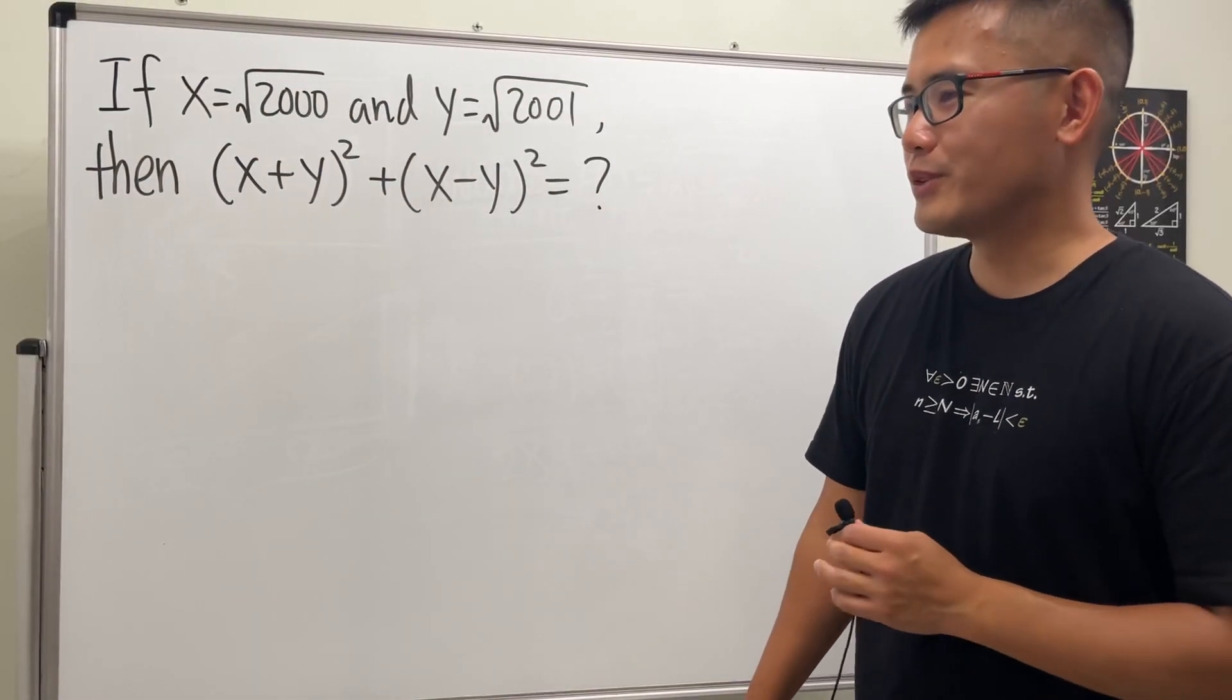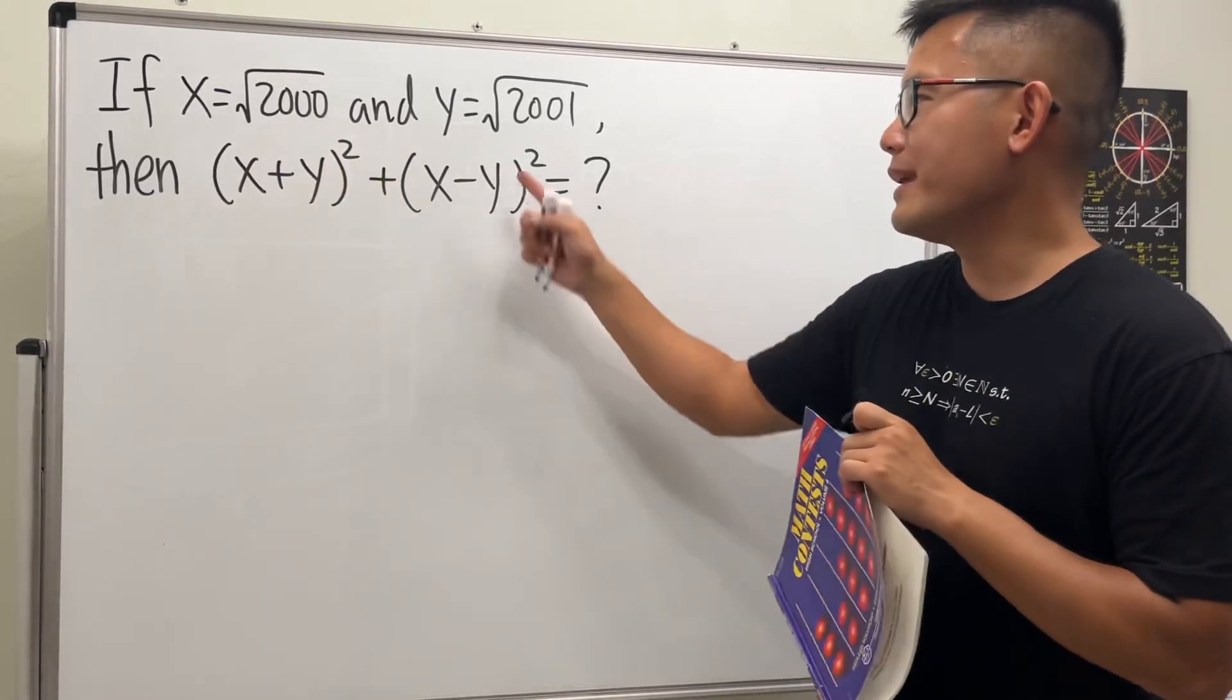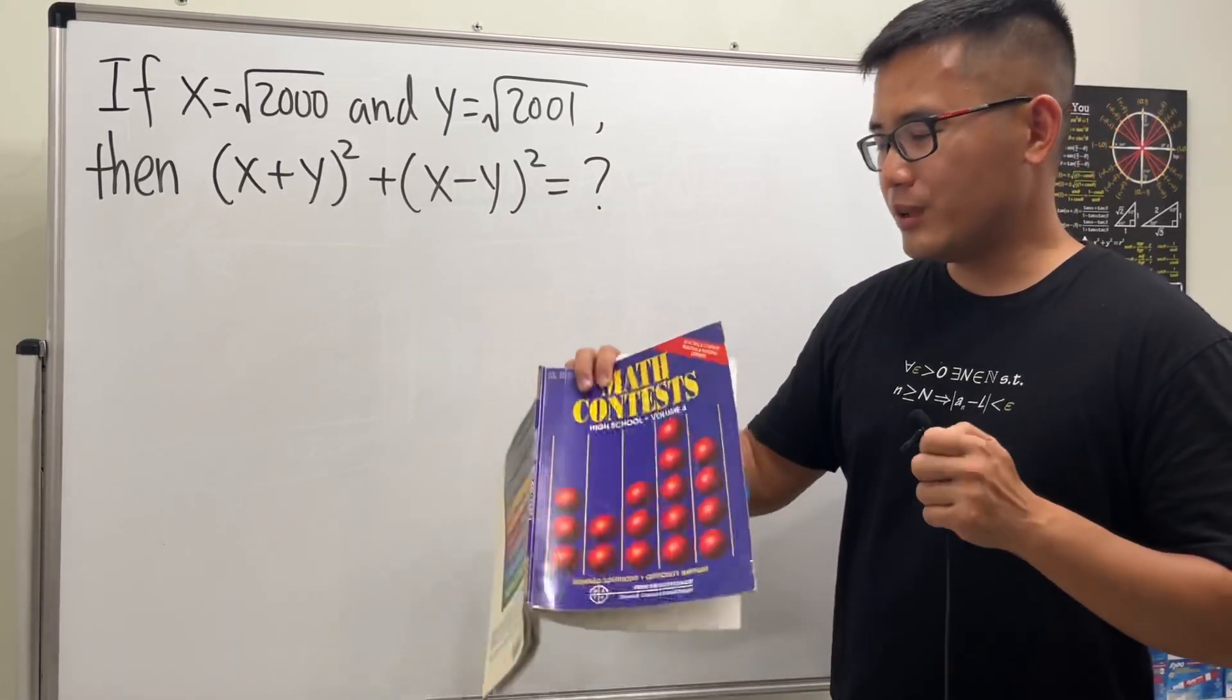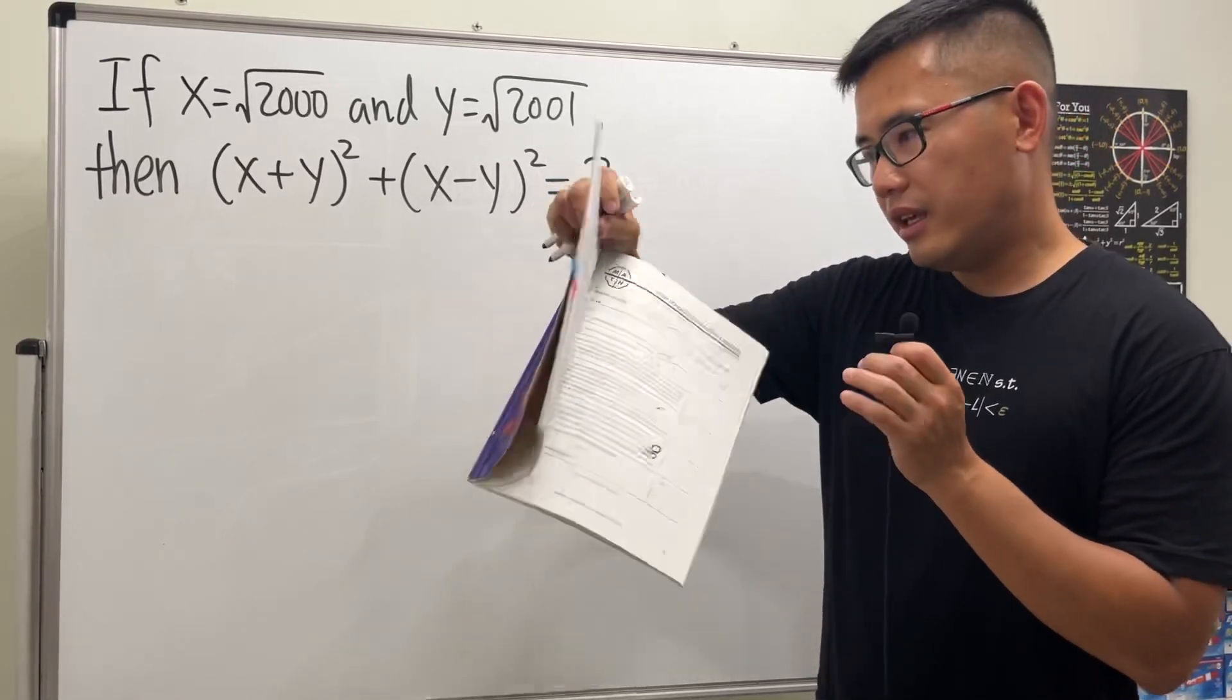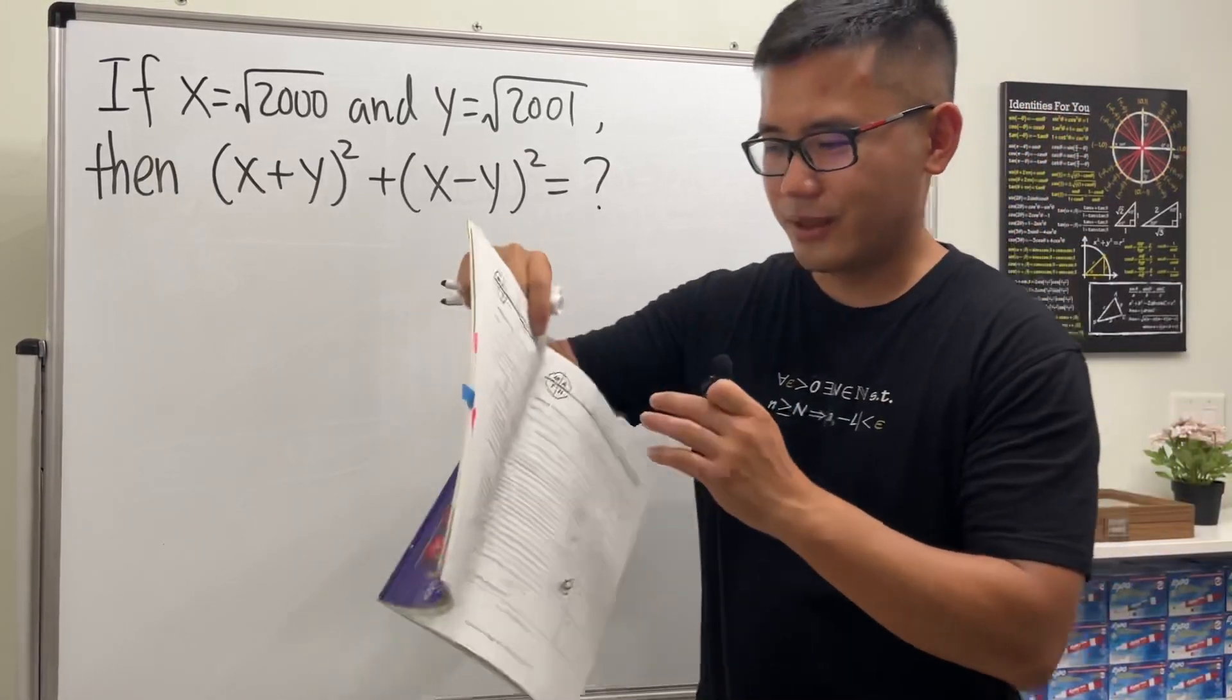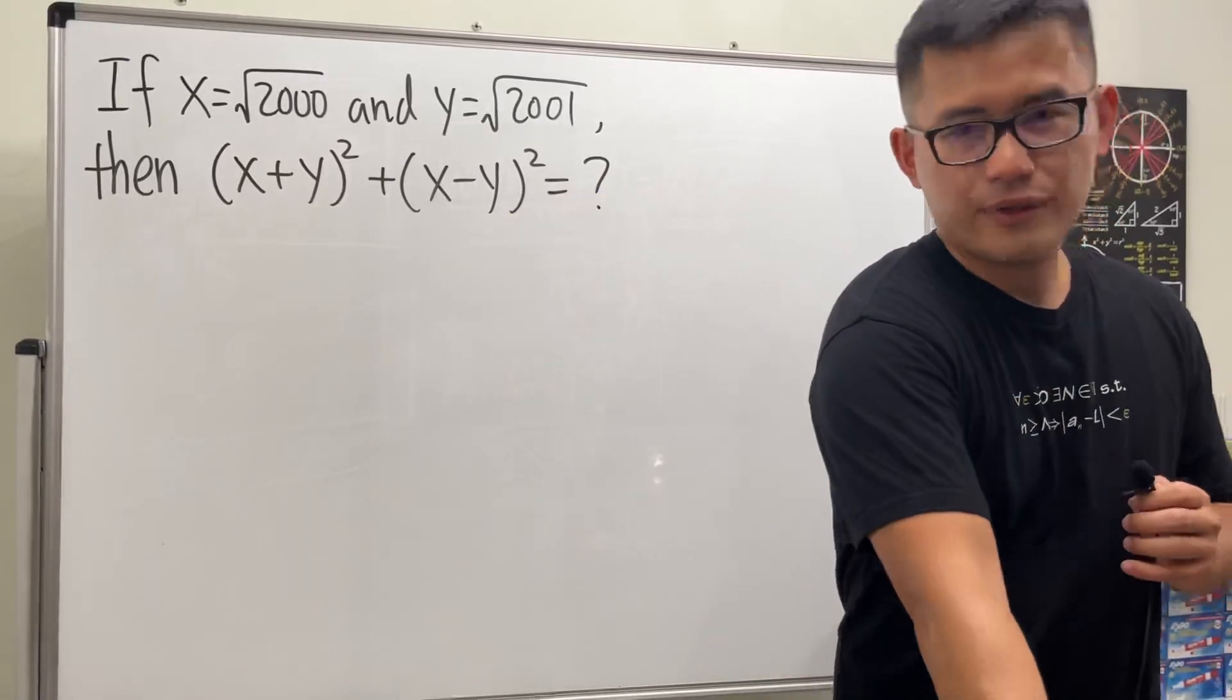Here's an algebra question for you guys. We are given that x is equal to square root of 2000 and y is equal to square root of 2001, and we are going to compute this expression. I will tell you that this is actually from the Math League contest in the year of - take a guess, is it 2000 or 2001? 2001, okay. So it's this question right here.